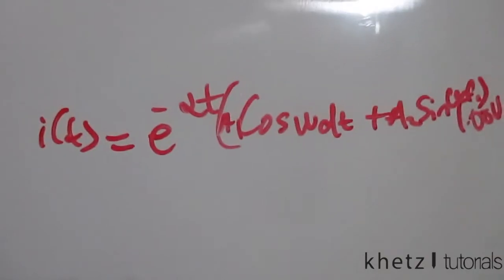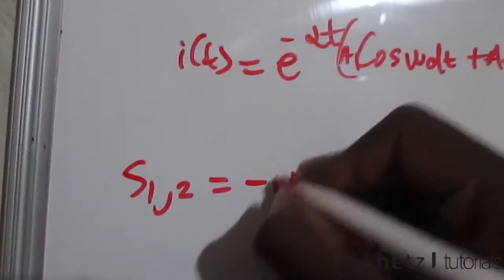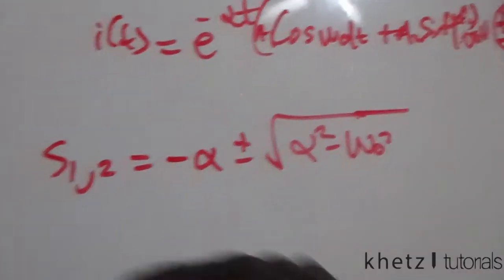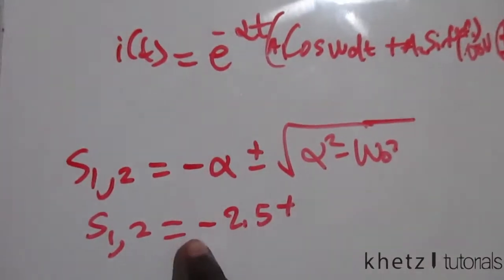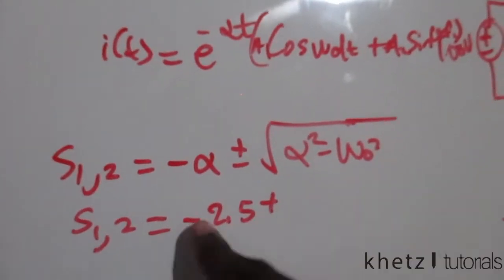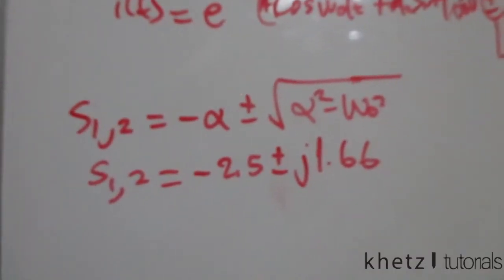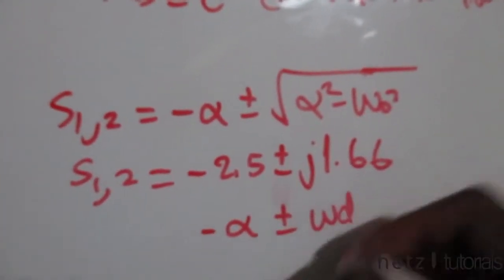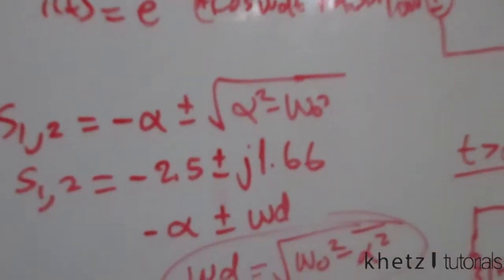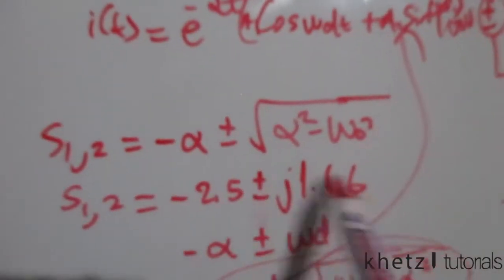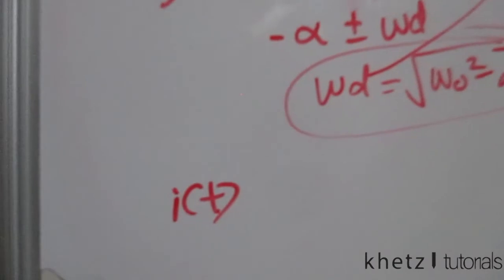Let's find the roots. Turn your calculator to complex form. The roots are s = −α ± √(α² − ω₀²), giving s₁ and s₂ = −2.5 ± j1.66. This is in the form −α ± jω_d, where ω_d = √(ω₀² − α²) = 1.66.